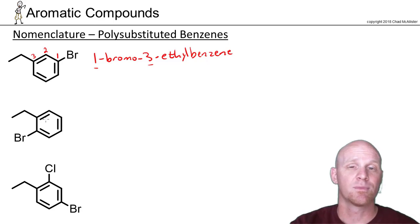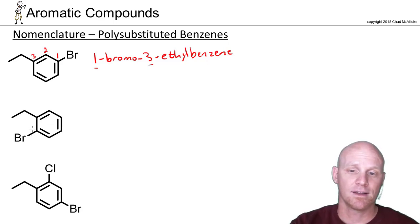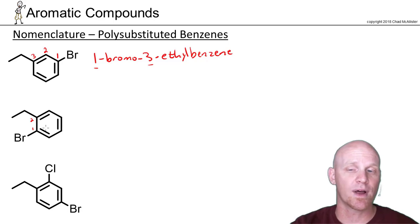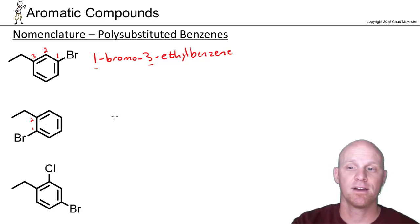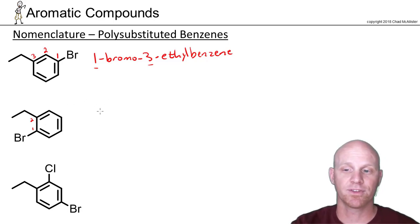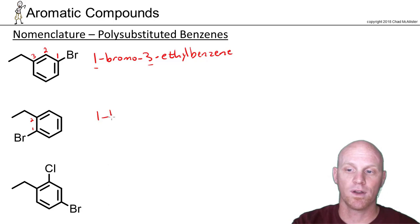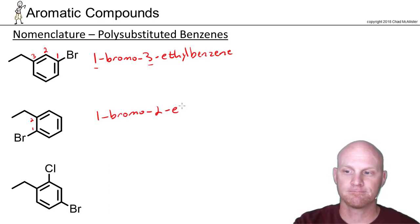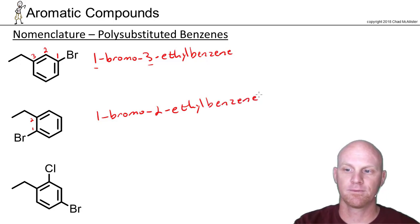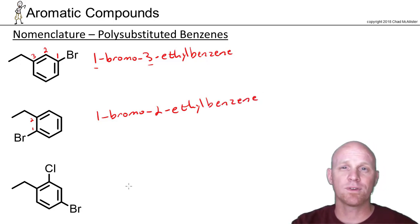Same approach for the next example — still bromo and ethyl. It's one and two either way around the ring, but bromine breaks the tie alphabetically to get number one. So this is 1-bromo-2-ethylbenzene.